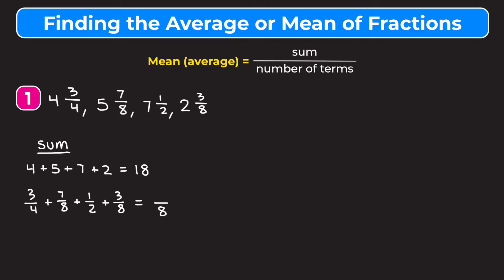So three fourths is going to become six eighths. Seven eighths can stay as it is. One half will become four eighths. And three eighths can stay as it is. And now we're going to add the numerators. So six plus seven is 13 plus four is 17 plus three is 20.